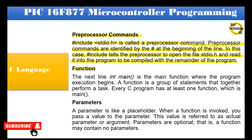The next line, int main(), is the main function where the program execution begins. A function is a group of statements that together perform a task. Every C program has at least one function, which is main.